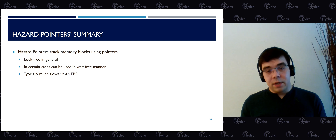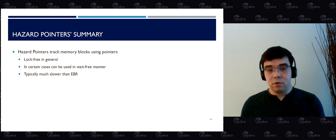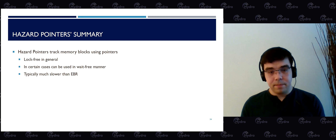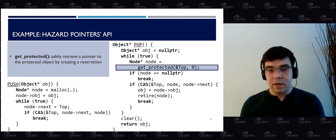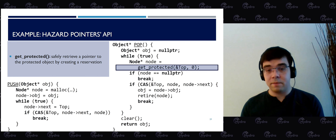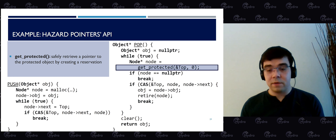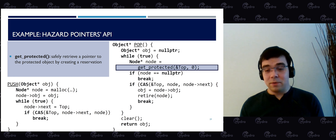Hazard pointers track memory using pointers and are lock-free in general — in certain cases they can be used in a wait-free manner. However, they are typically much slower than EBR. The reason is that get-protected must issue a memory fence to advertise the pointer into the reservation. If get-protected is called frequently — for example in read-intensive data structures — we incur significant cost because each read triggers a memory fence, which developers may not expect.